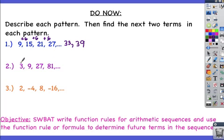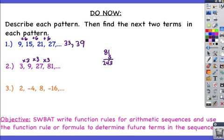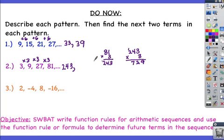Number 2: to get from 3 to 9, 9 to 27, and 27 to 81, we're multiplying by 3 each time. So then we have 81 times 3, which is 243, and 243 times 3, which is 729.